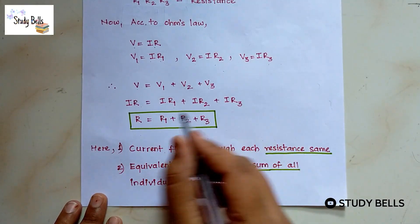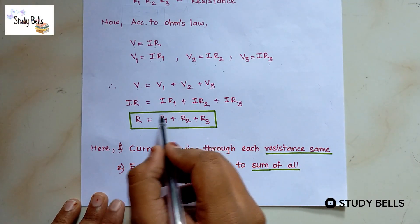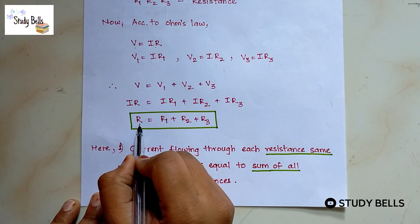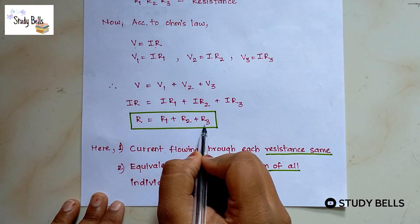Current is same. So it can be cancelled. We will get R equals R1 plus R2 plus R3.